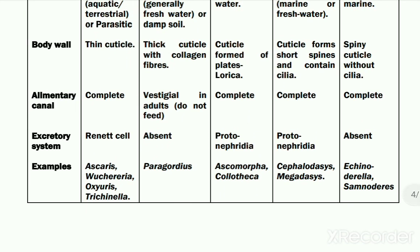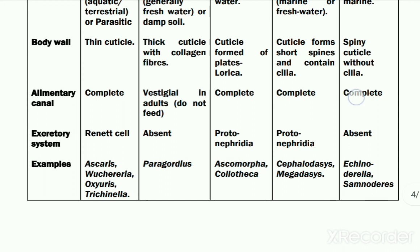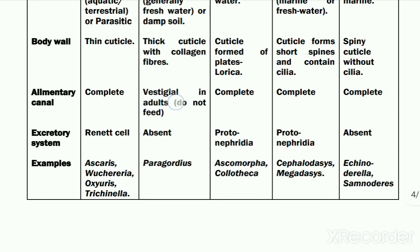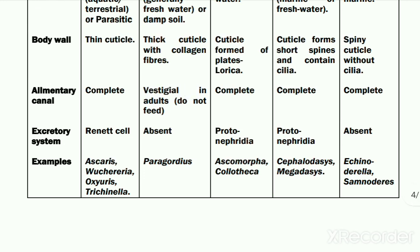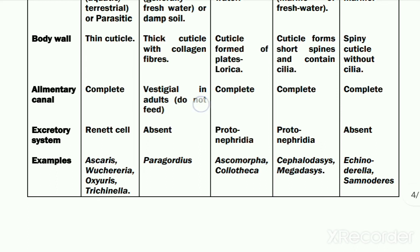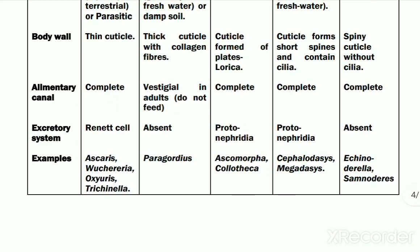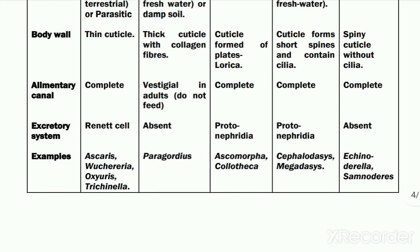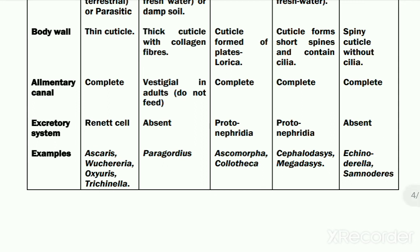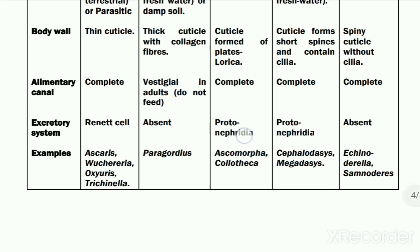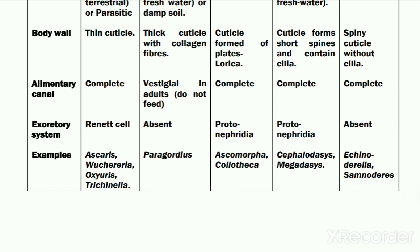Regarding the elementary canal: it is complete in Nematoda, Rotifera, Gastrotricha, and Kinorhyncha, but in Nematomorpha the elementary canal is vestigial or non-functional in adults, as adults live for a very short period and do not feed. Regarding the excretory system: it is formed by the renette cell in Nematoda; altogether absent in Nematomorpha and Kinorhyncha; and formed by protonephridia in Rotifera and Gastrotricha.